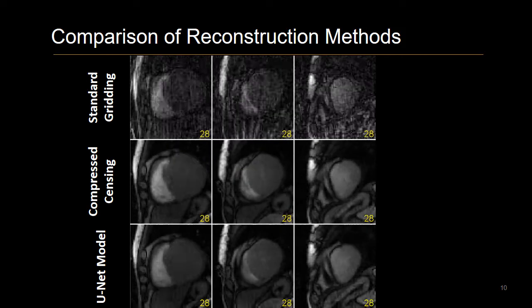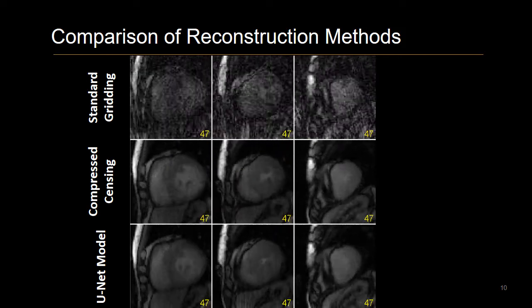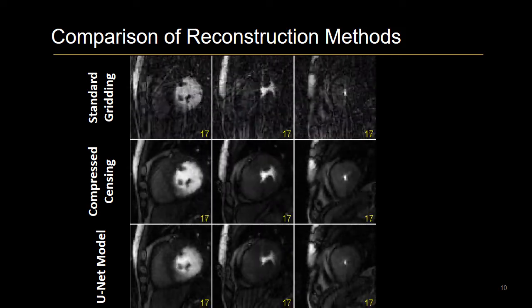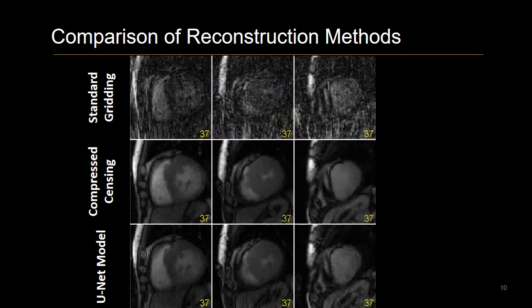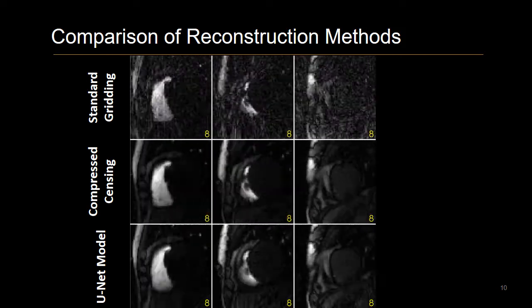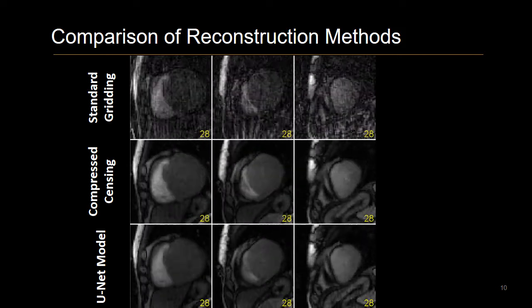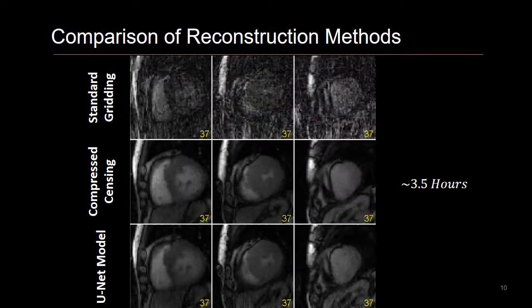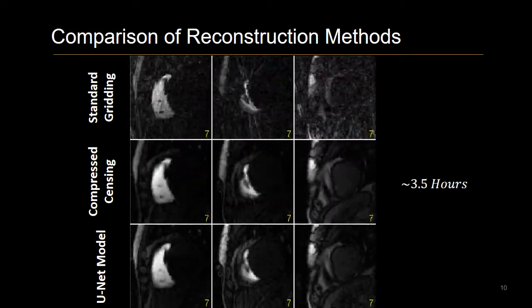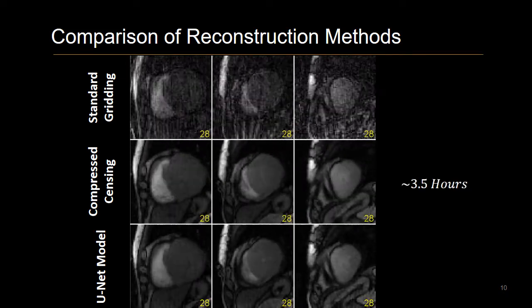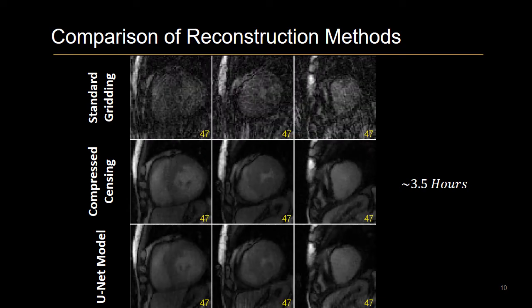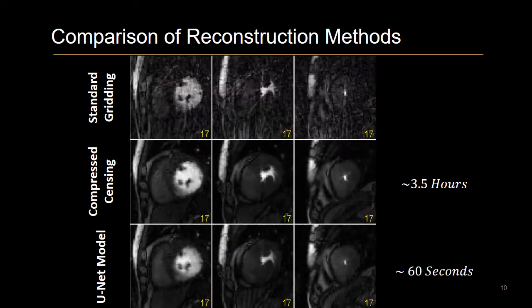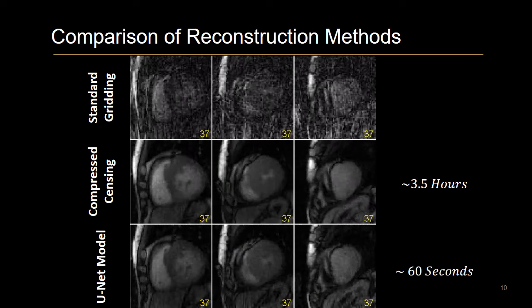As you can see, both compressed sensing and the UNET model were able to successfully remove the streaking artifacts. However, while the compressed sensing reconstruction took approximately three and a half hours, our model was able to achieve similar results in just 60 seconds.